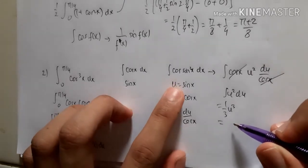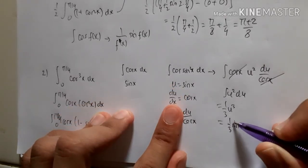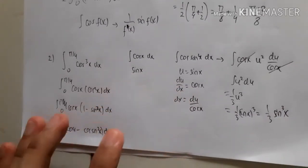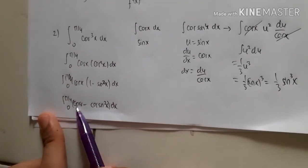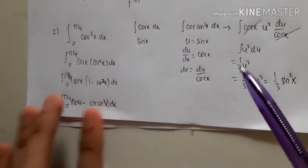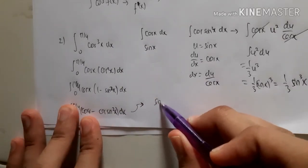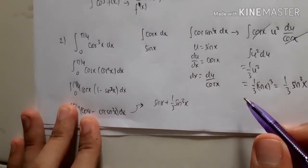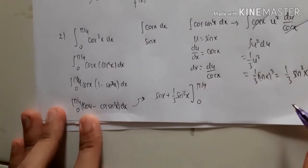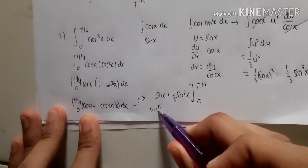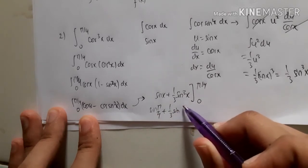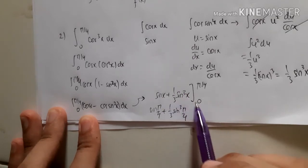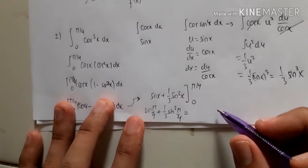Substituting back, u = sin x gives (1/3)sin³x. Combining both results, the antiderivative is sin x − (1/3)sin³x. Applying the limits from 0 to π/4: at x = 0 everything is zero, so we only evaluate at x = π/4. We recall that sin(π/4) = √2/2.